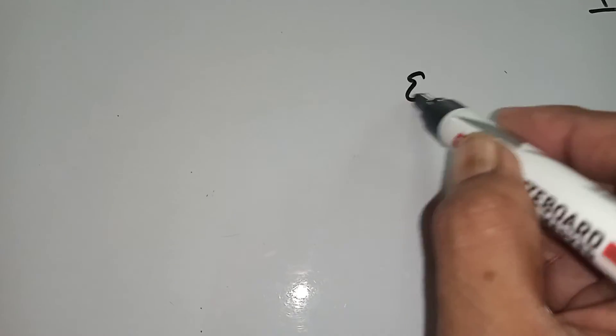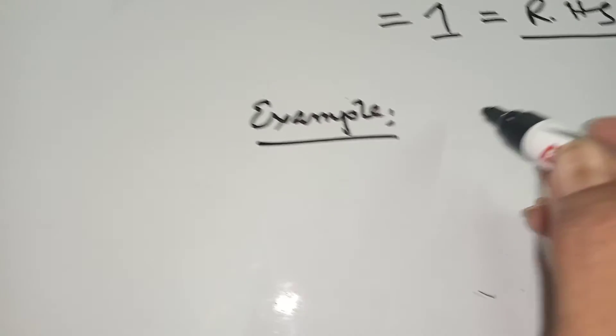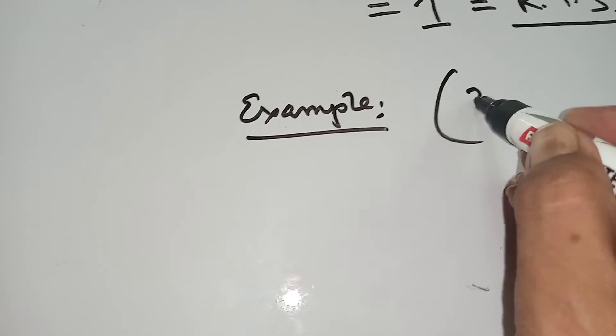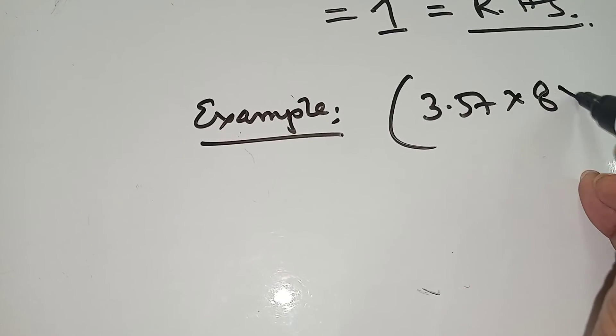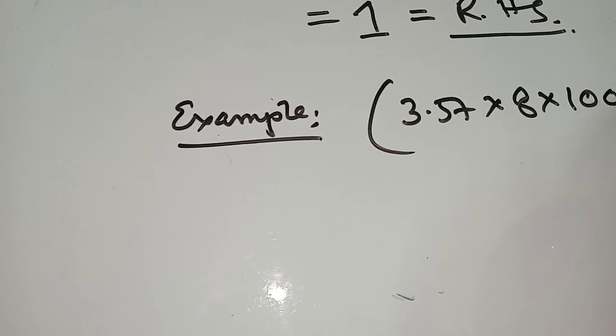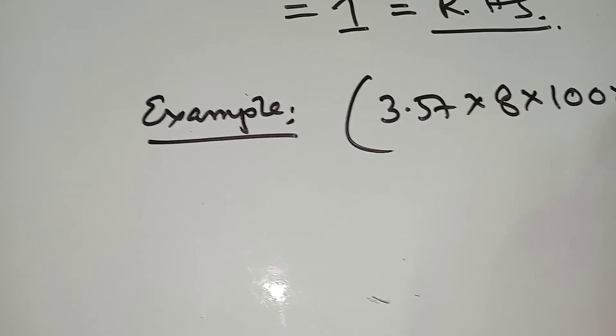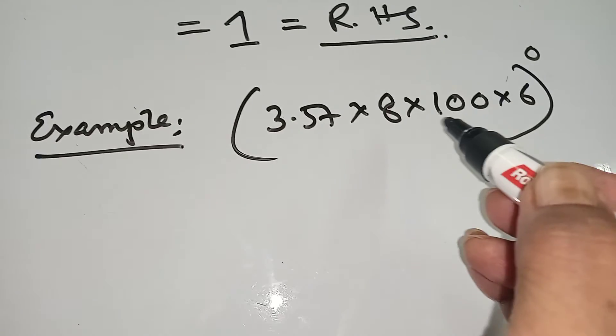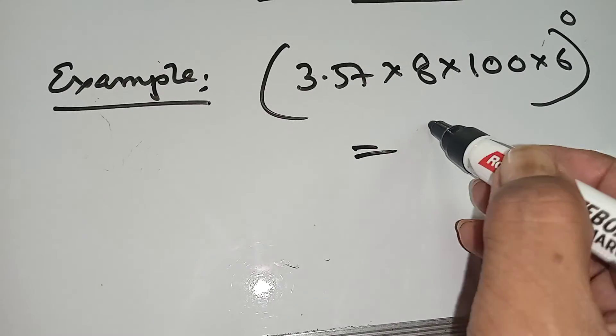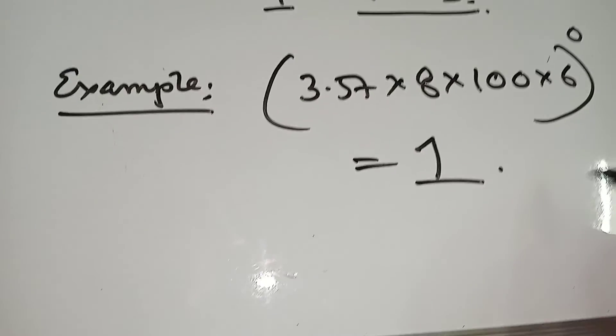Suppose an example: 3.57 into 8 into 100 into 64 to the power 0. Now this one you can write 1 directly, because anything to the power 0 equals 1. This is the formula.